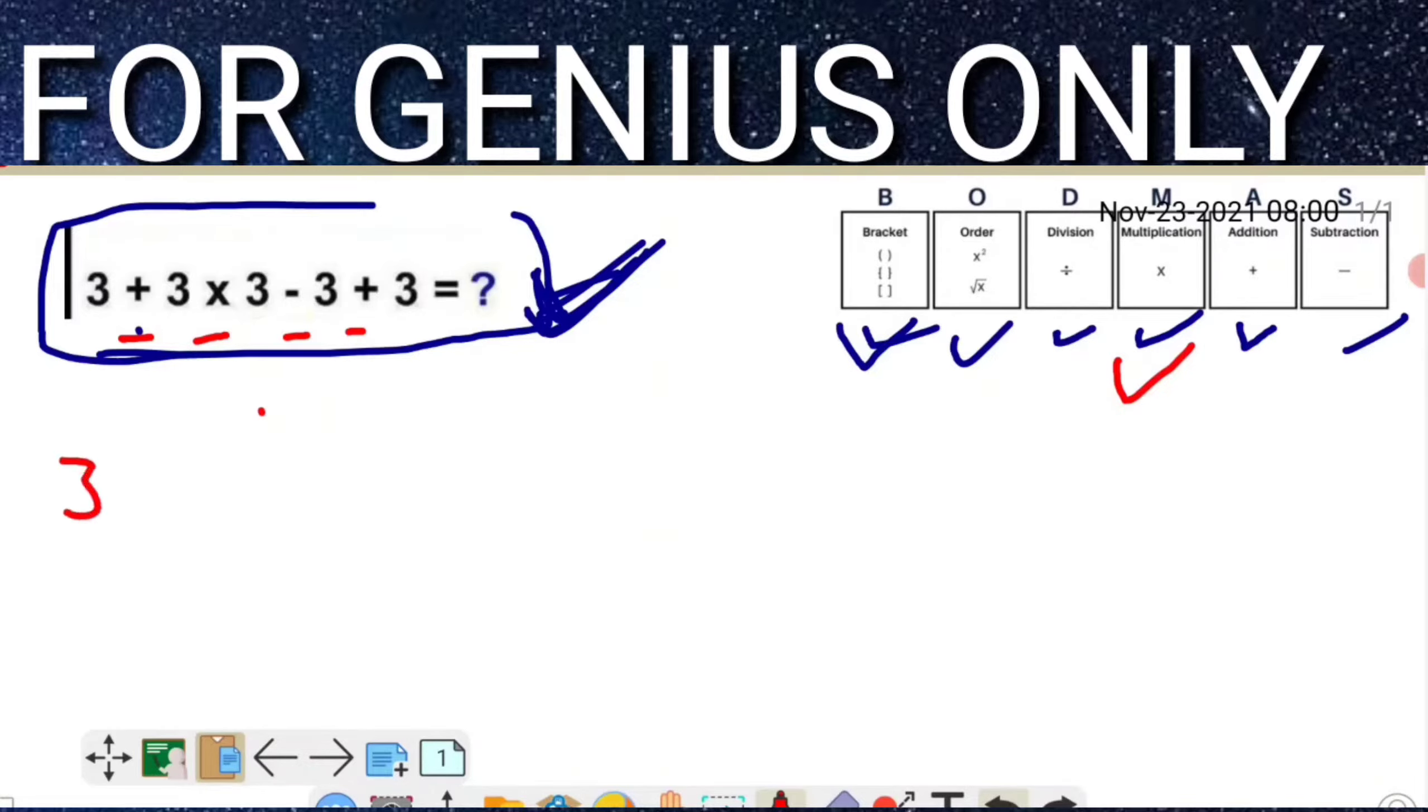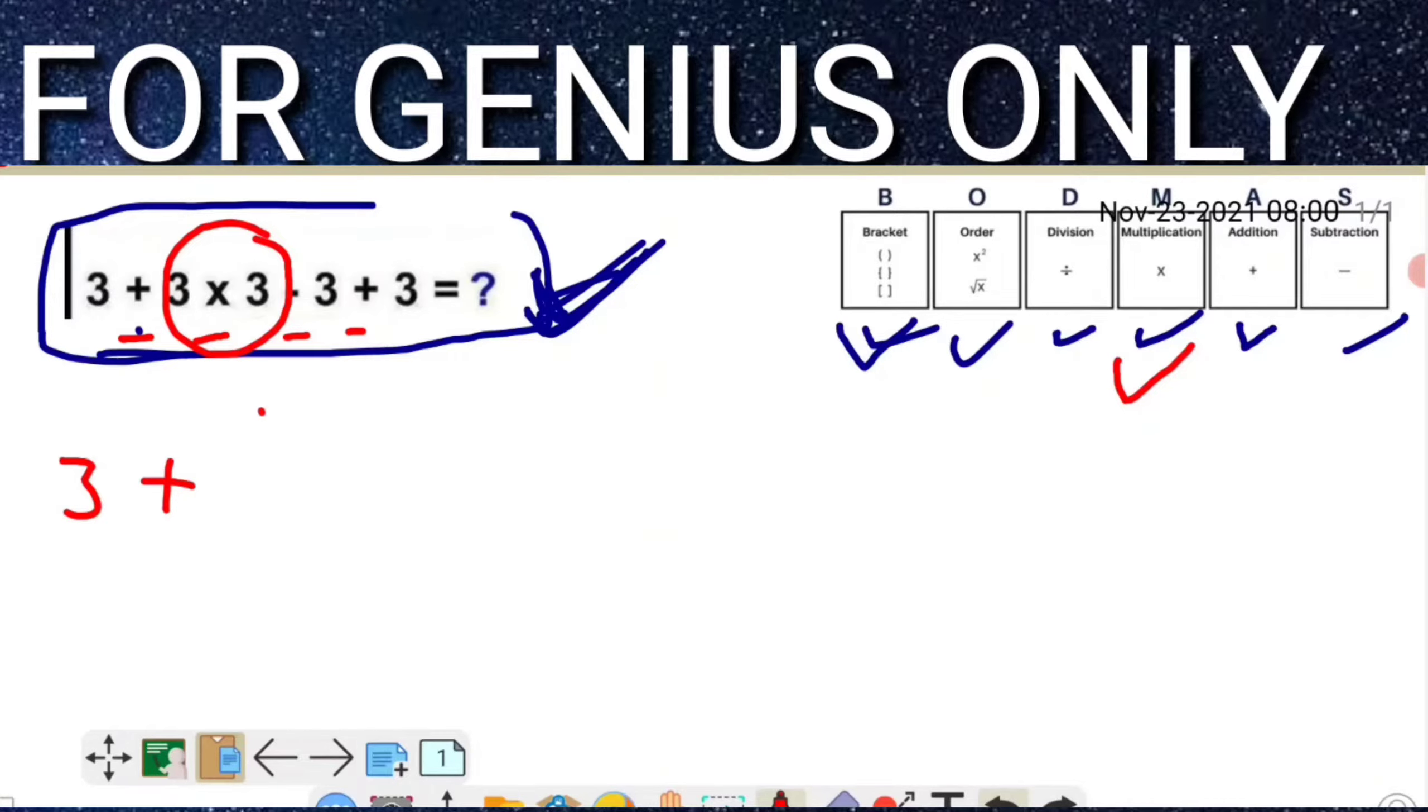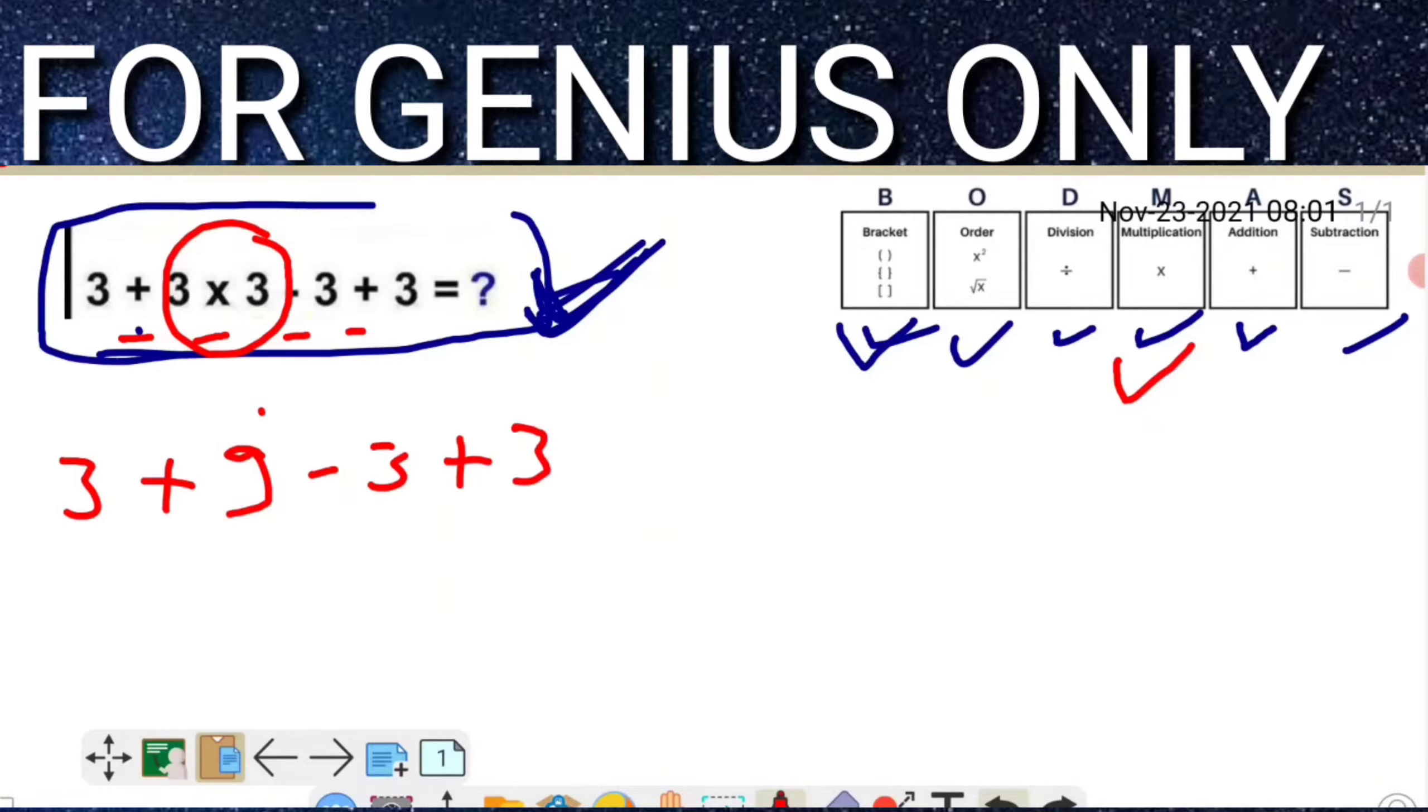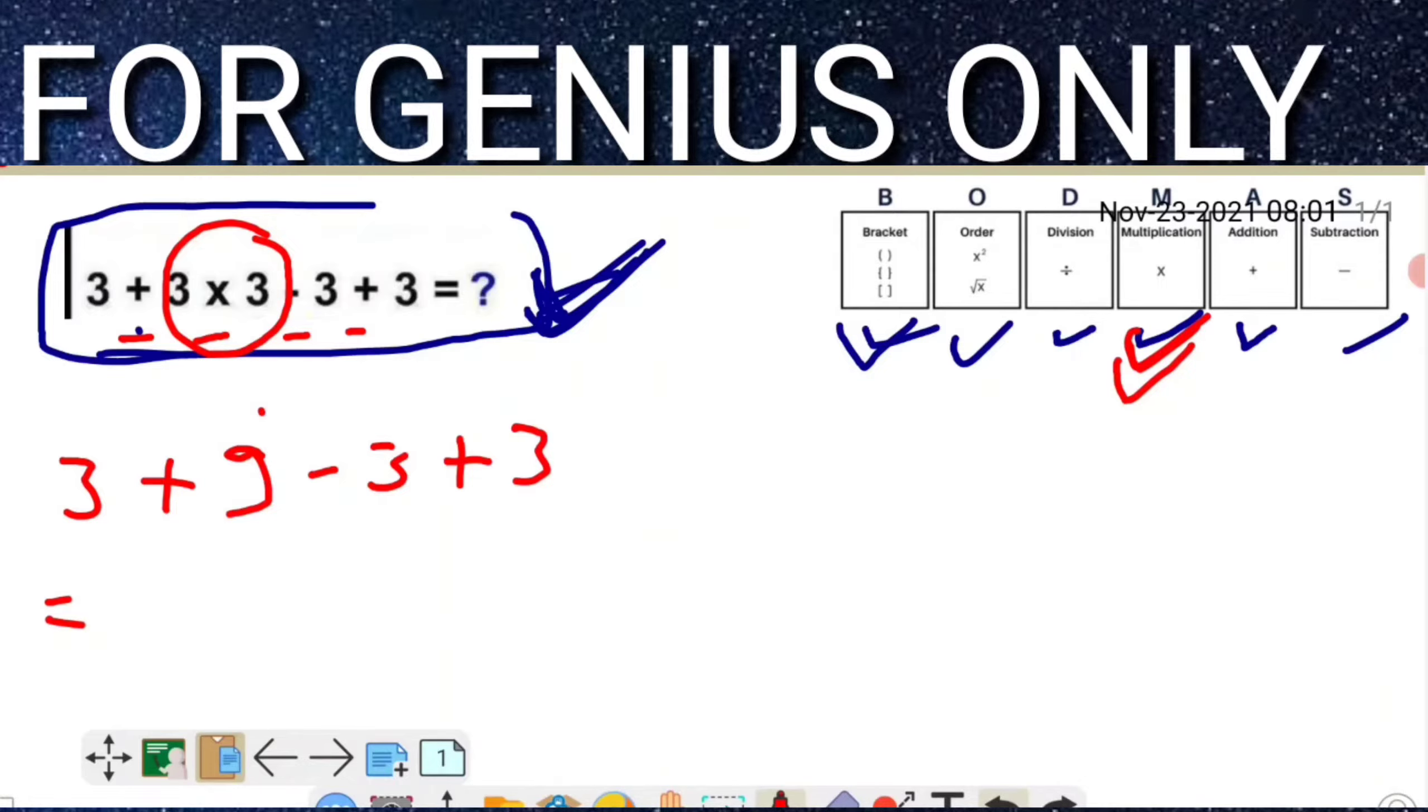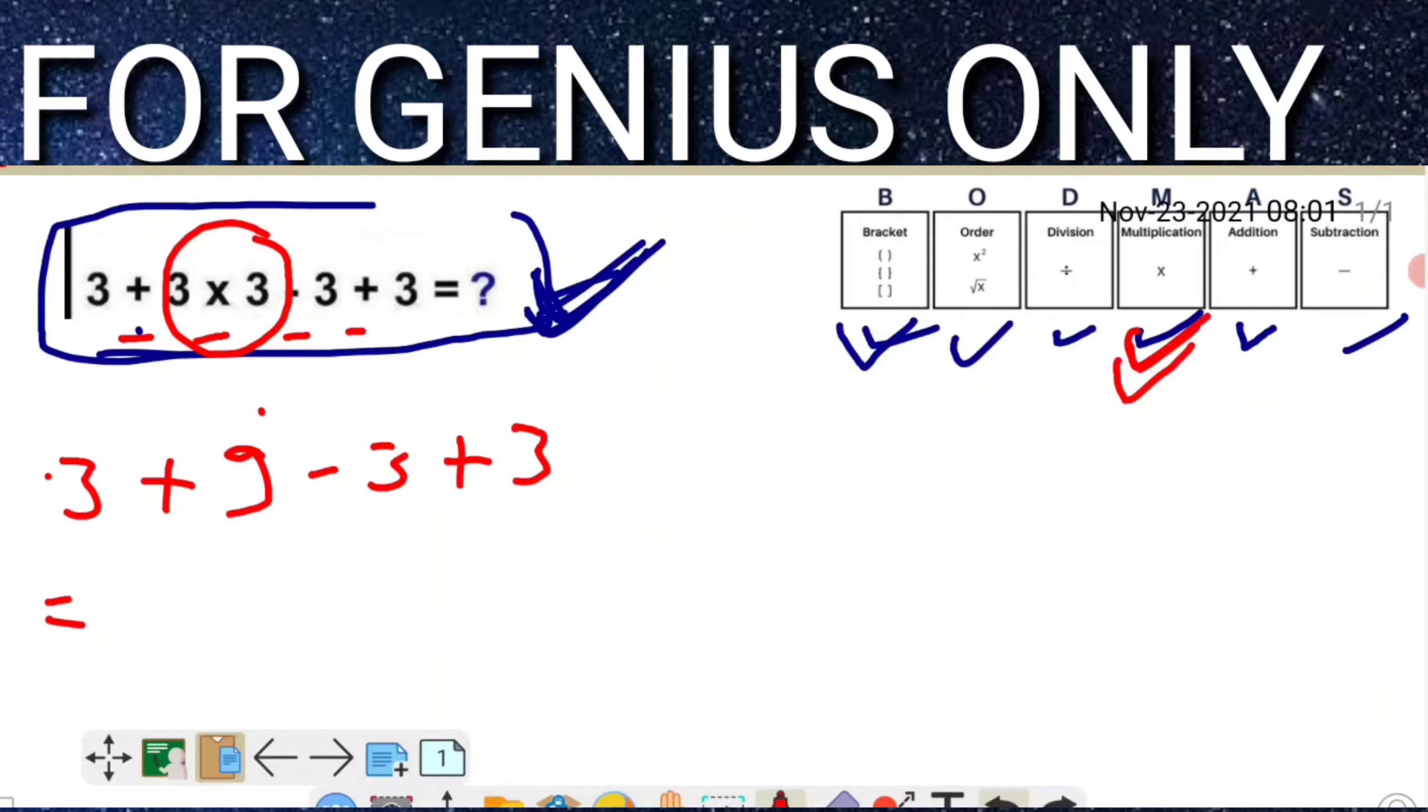Now watch here: 3 multiply 3 equals 9. After multiplication, we follow addition. If any digit doesn't have a sign before it, we treat it as positive. So we have 3 plus 9 plus 3, which equals 15.